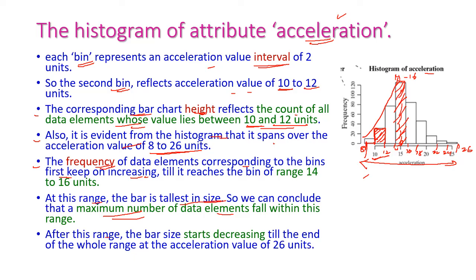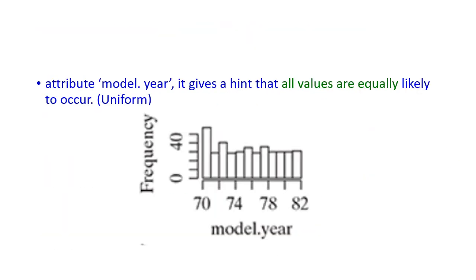The bar size starts decreasing after 16, and the histogram decreases up to 26. For the model year histogram, all values are equal — that is uniform. The minimum value is 70 and maximum is 82, and almost all histogram values are equal. This is a uniform model.